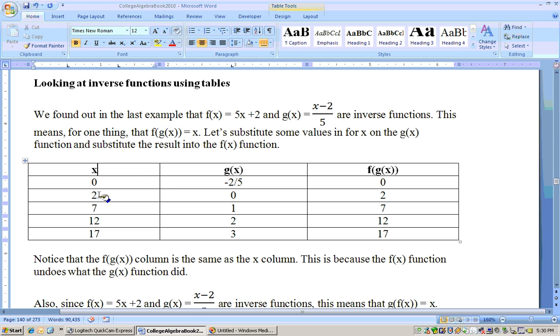Let's substitute 2 in for x. If I substitute 2 in for x on the g function, I would get 2 minus 2 is 0. 0 divided by 5 is 0. Now substitute 0 in for x here, and you get 2. So the f function cancels out the g function.